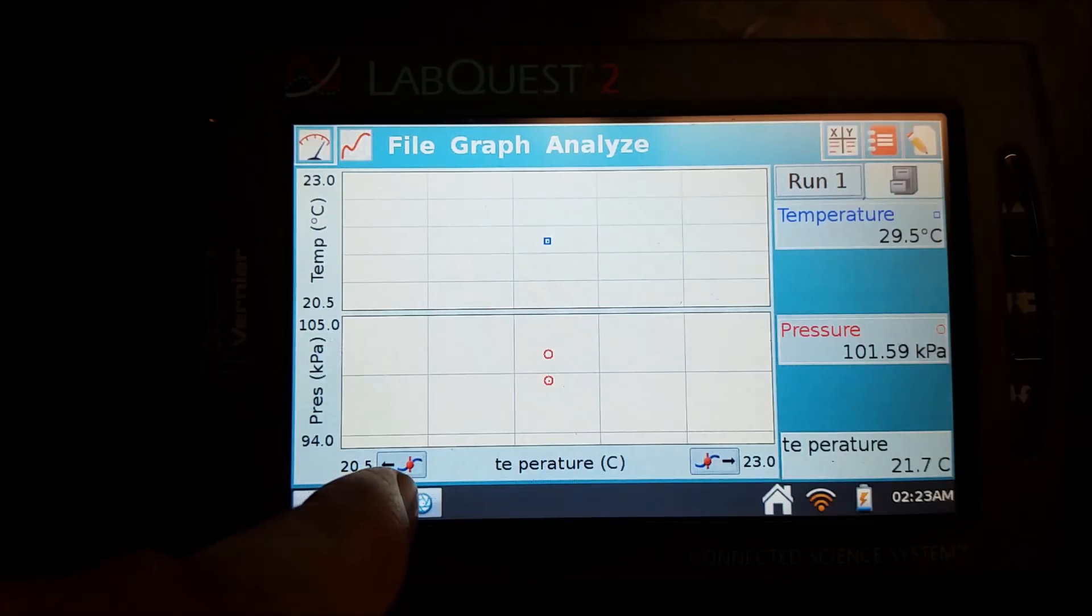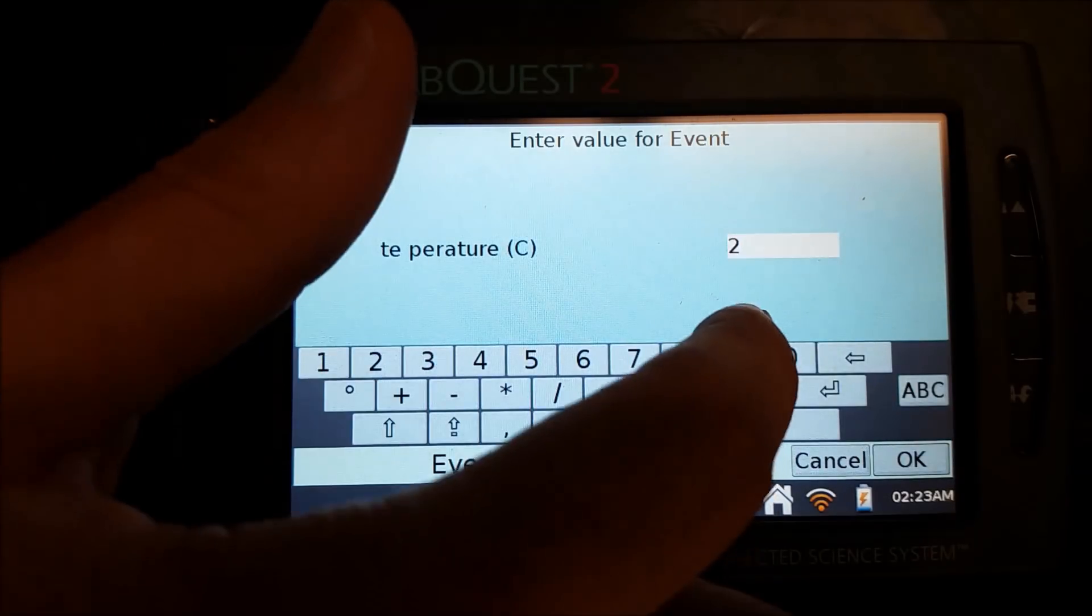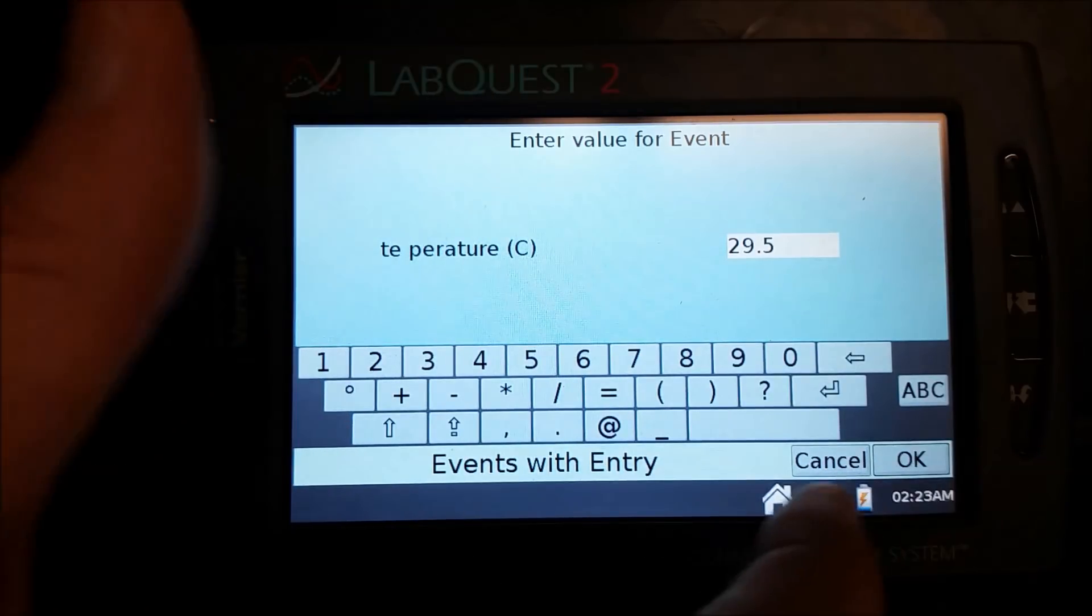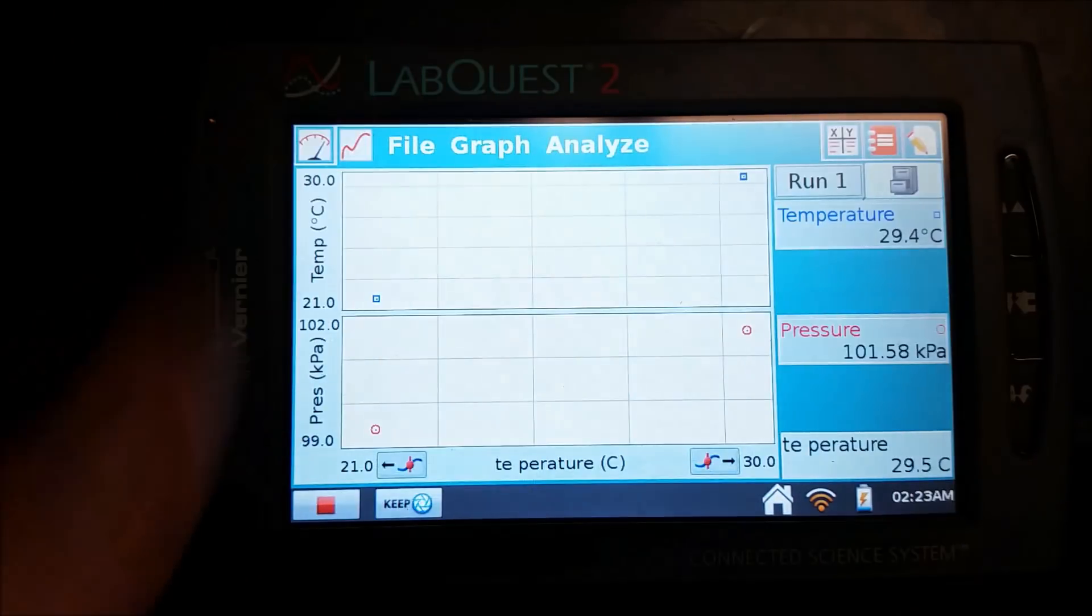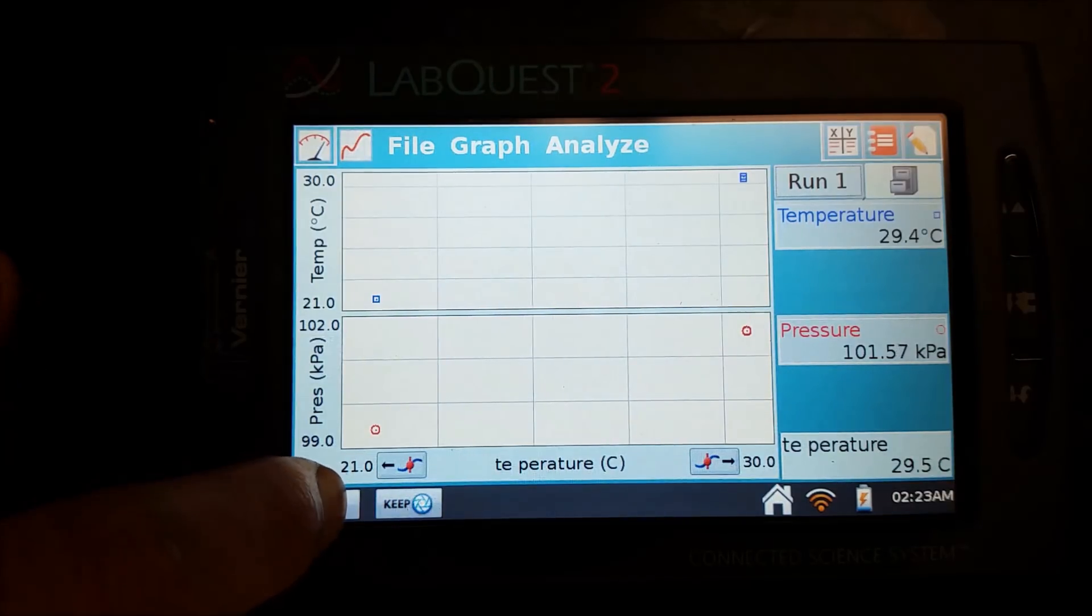OK, so let's say we're satisfied with that. We go ahead and hit Keep and we look at our temperature. Temperature is 29.5 degrees. So we hit Keep and type in the 29.5. And now we have two data points. So you will continue on and do this until you have five data points. But I'm going to go ahead and stop there.